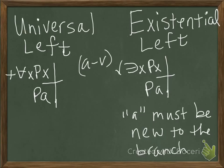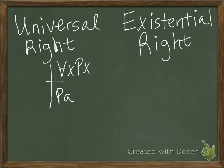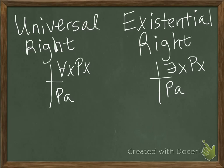Now we'll go to the rules for the right-hand side of the truth tree: universal right and existential right. Similarly to the left-hand side rules, we are going to instantiate the formula. So if we have there exists an x, px on the right, we'll instantiate that as pa. Again, we can use any of the letters a through v to instantiate our formula.